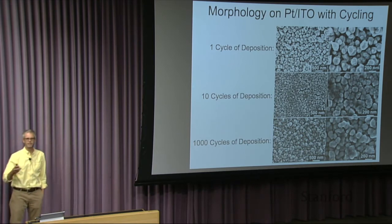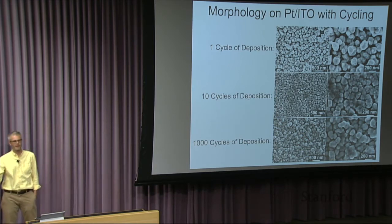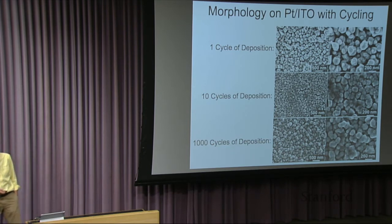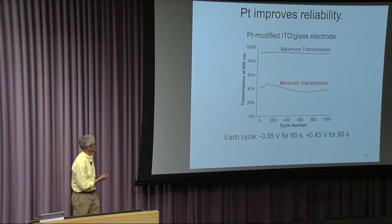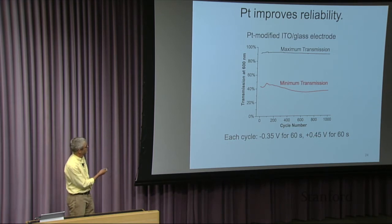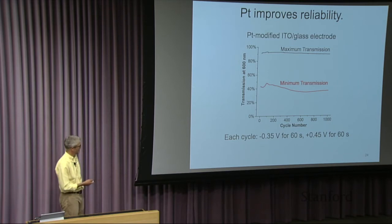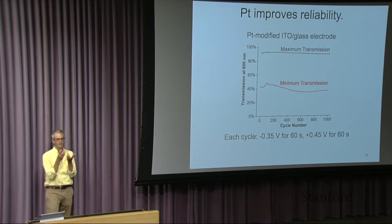And so here is when we do an experiment where we plate for 60 seconds and then strip for 60 and plot the maximum transmission and the minimum, it's very stable. There is some conditioning of the electrolyte that occurs at first and then it's very stable. Later I'll show even more cycles. This, right now, it's not yet a window. This is actually in a beaker and I'll show you the window in a couple of slides.